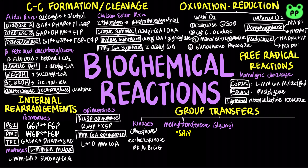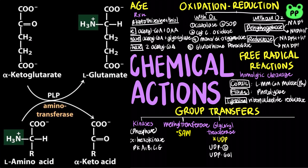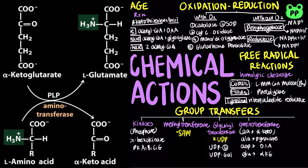Glycosyltransferases catalyze the transfer of sugar molecules. They usually involve uridine diphosphate, such as UDP-glucose and UDP-galactose, which are involved in polysaccharide biosynthesis. Aminotransferases, also known as transaminases, transfer an amino group to a keto acid to form new amino acids, such as between alanine and pyruvate, aspartate and oxaloacetate, and glutamate and alpha-ketoglutarate. They involve the coenzyme PLP, which stands for pyridoxal 5-phosphate, derived from vitamin B6.